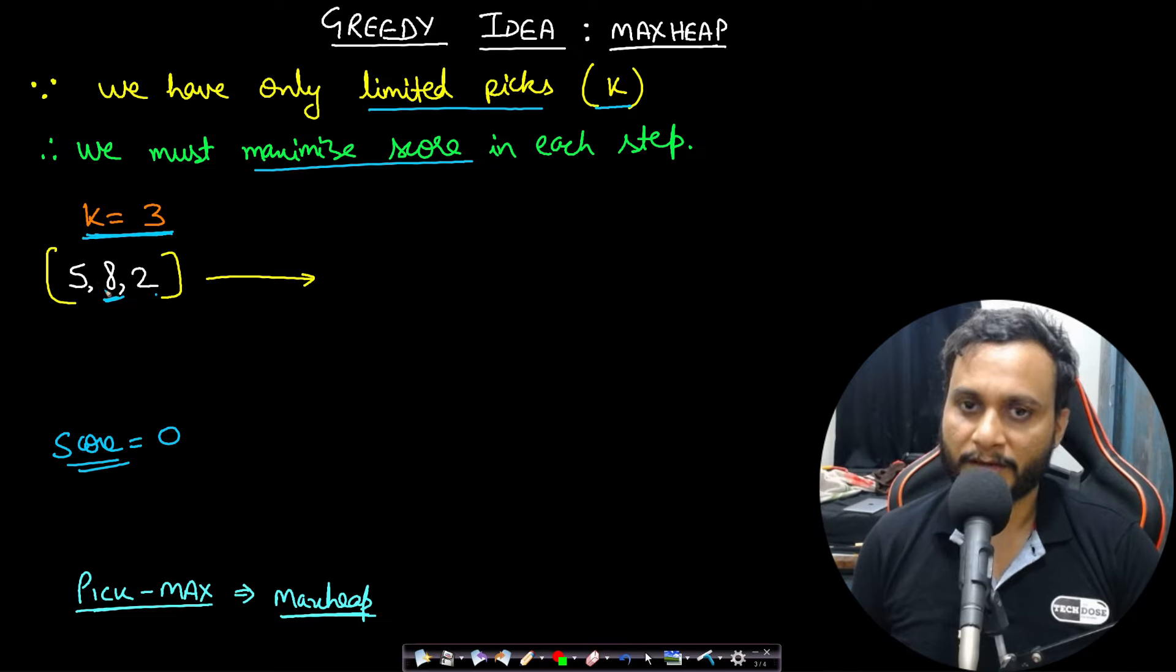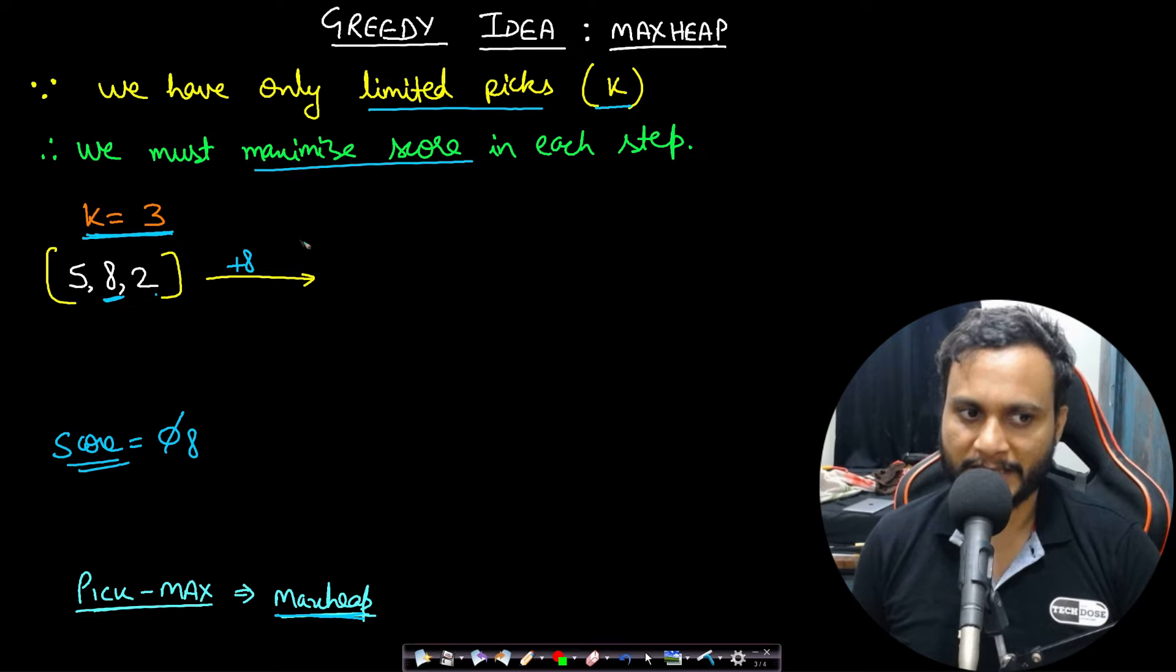Picking the max value can efficiently happen if you build a max heap out of it. I will show you in the code, but let's say it is already inserted into a max heap. So 8 will be picked and score will be added with plus 8. So score became 8 and 8 by 3 ceiling will become 3.